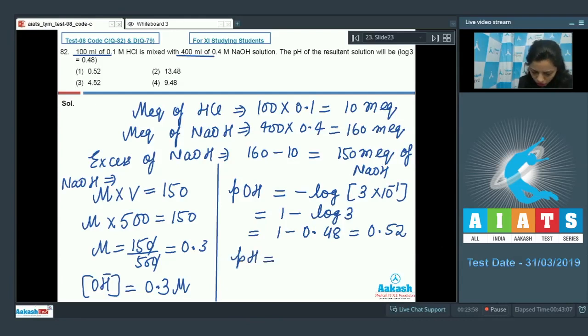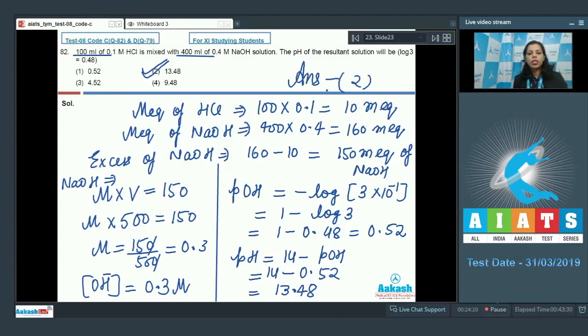So pOH is 0.52. What would be pH? pH is 14 minus pOH, and here it is 14 minus 0.52, and this is equal to 13.48. This is the pH of this given solution after neutralization. So here is option 2, that's correct for this question. Just choose it as your correct answer.